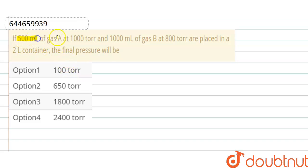If 500 ml of gas A at 1000 torr and 1000 ml of gas B at 800 torr are placed in a 2 liter container, the final pressure will be. Okay, so here we have to find out the final pressure.